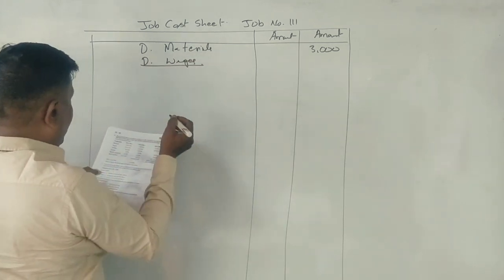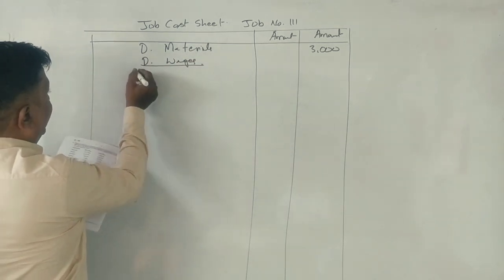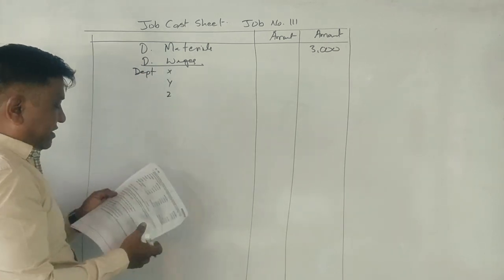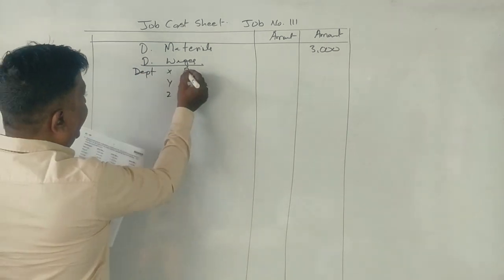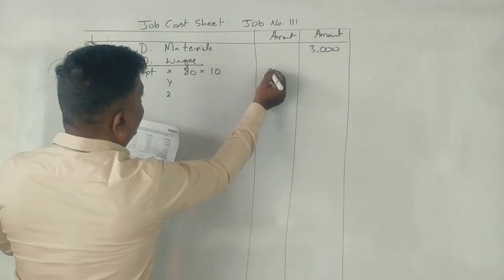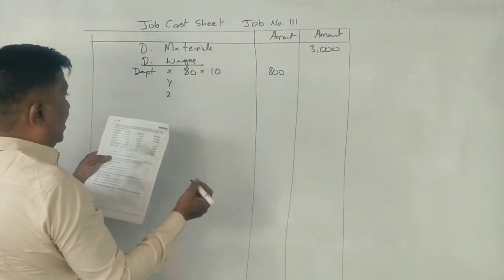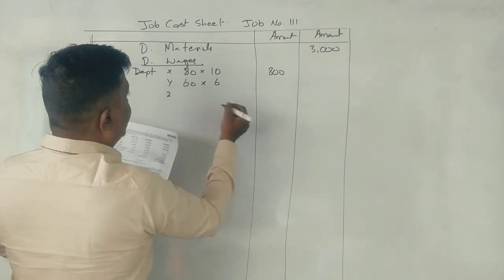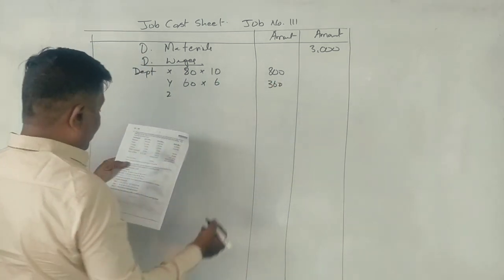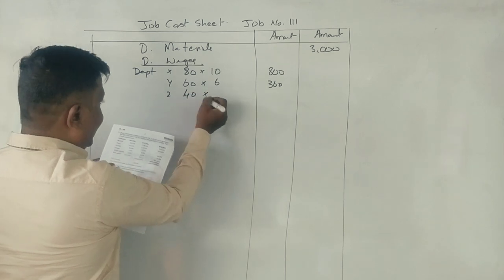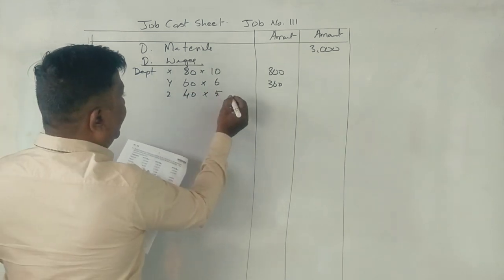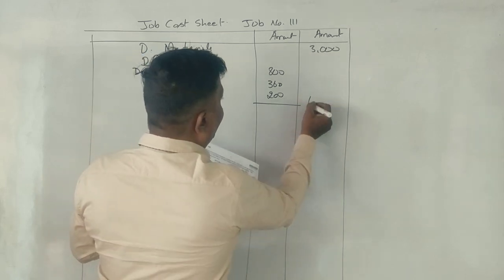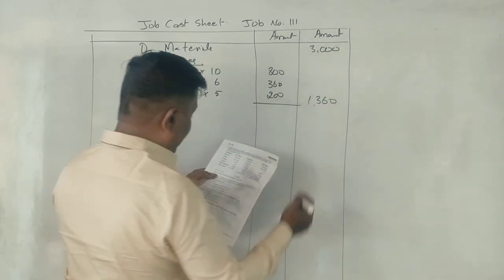Direct wages. There are more departments. Department X, Y and Z. X, 80 hours, 1 hour, 10 rupees, 800. Department Y, 60 hours, 1 hour, 6 rupees, 360 rupees. Department Z, 40 hours, 5 rupees, 200 rupees. In total, 1,360 rupees.